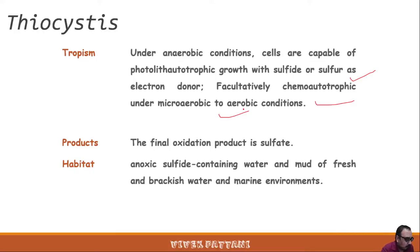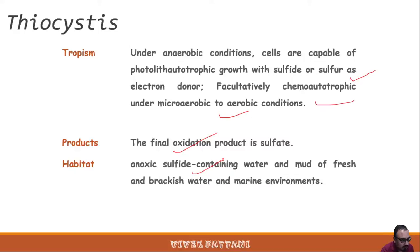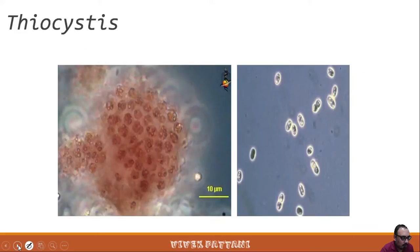During sulfide oxidation no globules of elemental sulfur are stored inside the cell, and storage of polysaccharide, poly-beta-hydroxybutyrate, and polyphosphates occurs. Under anaerobic conditions cells are capable of photolitho-autotrophic growth with sulfide or sulfur as electron donor. They are facultatively chemo-autotrophic under micro-aerobic to aerobic conditions. The final oxidation product is sulfide and their habitat is anoxic sulfide-containing water and mud of fresh, brackish, and marine environments.